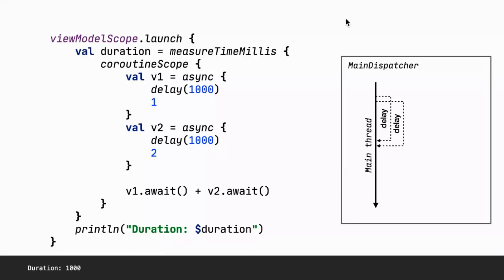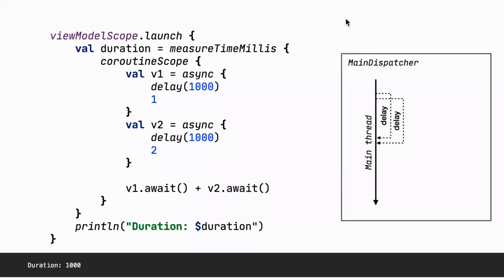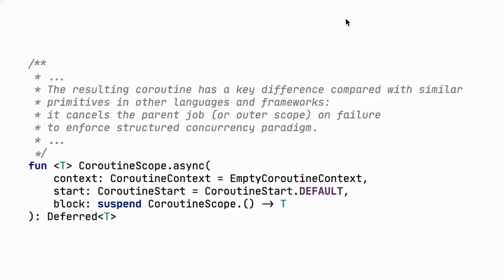Looking at the async method definition in the coroutines library, it's an extension function of CoroutineScope — so we need a CoroutineScope to execute something in parallel. There's a really important phrase in the documentation: it cancels the parent job or outer scope on failure. We have to pay close attention to this.